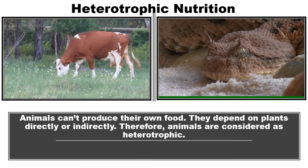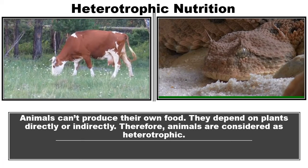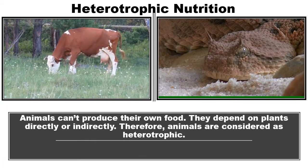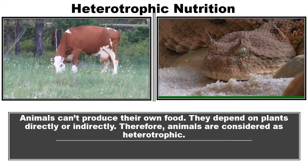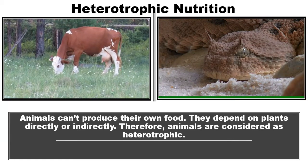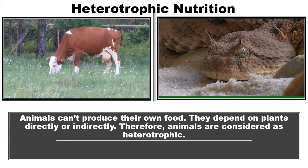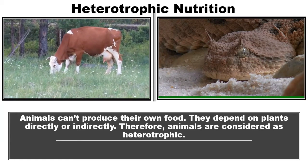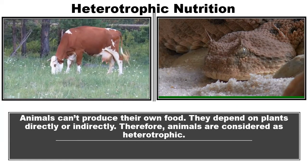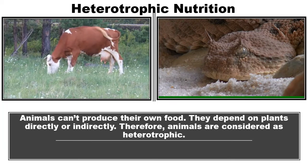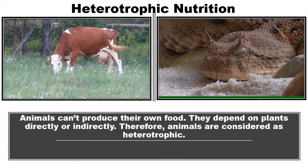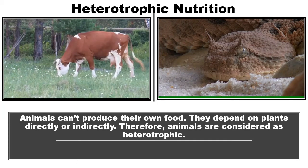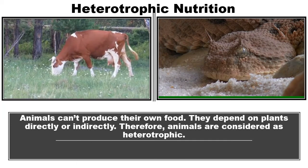Heterotrophic nutrition: Animals cannot produce their own food. They depend on plants directly or indirectly. Therefore, animals are considered heterotrophic.